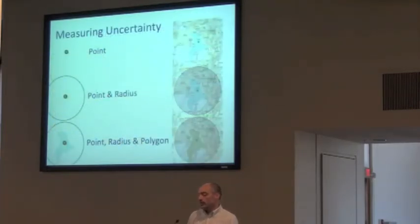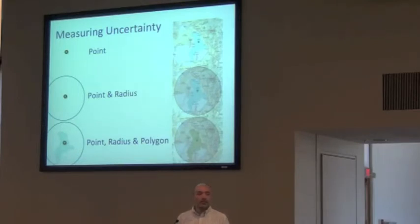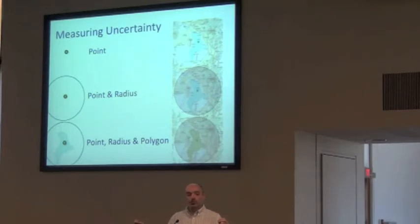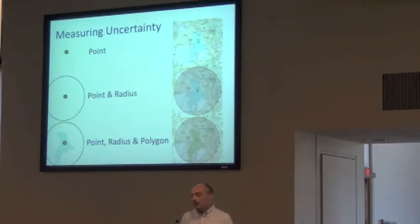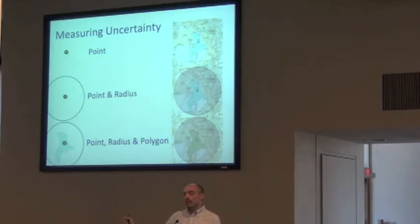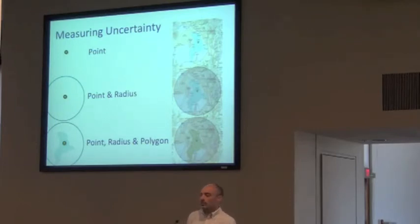For measuring uncertainty, Geolocate offers a number of different options. One is you can just ignore uncertainty and record a point — historically that is what has been done. The most common method today is probably representing uncertainty as a point radius, where you have a central point and measure out some distance recorded in meters. A third alternative is to store a point, potentially a radius, and a polygon. A polygon allows a much more accurate representation of your locality description. The point radius always centers your locality at that central point, whereas in a polygon your most likely point could be anywhere within it, giving higher flexibility without inflating uncertainty.